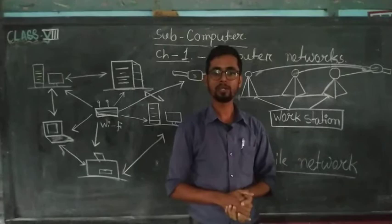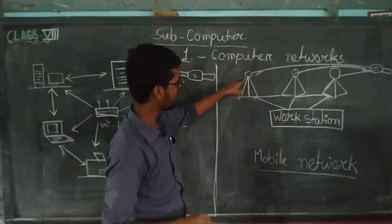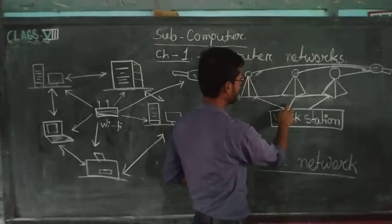There are work stations and all cables of this network or the tower are connected there. And whenever we use our mobile phone or internet or we call to anyone or send message, our signal directly goes to this tower. And this mobile tower will send the information to the work station. And by this work station, again this signal will go to another tower.